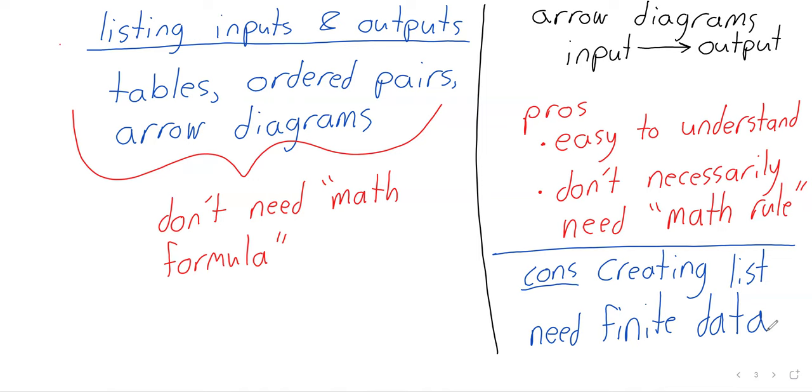Now we'll look at ordered pairs and tables. For an arrow diagram, you've got this list input to output. If you erase that arrow, put a comma between them and surround them in parentheses, you've now got an ordered pair.